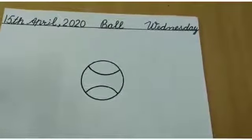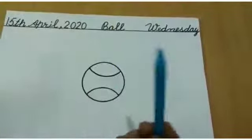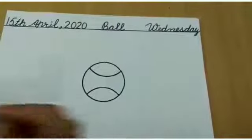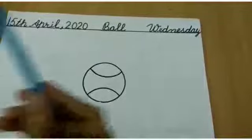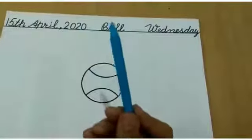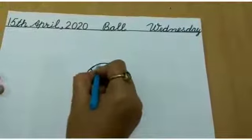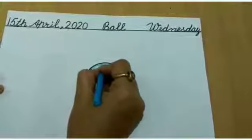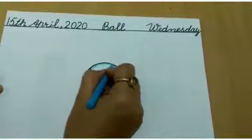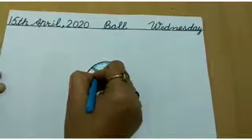Now we will do coloring. Take out the yellow crayon and sky blue crayon to color in the ball. First we will take the sky blue crayon to color here. Firstly color in the boundaries, like this.